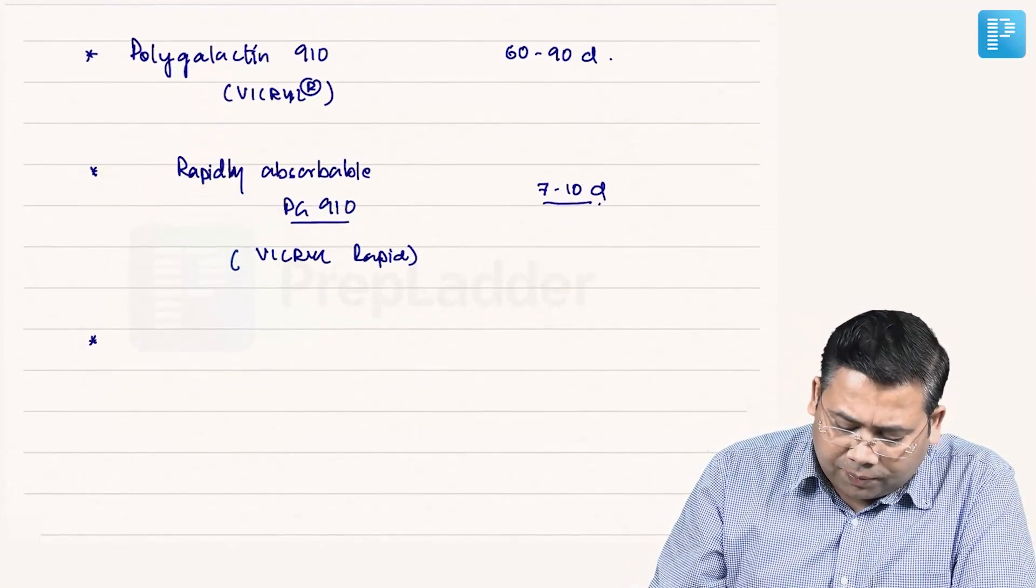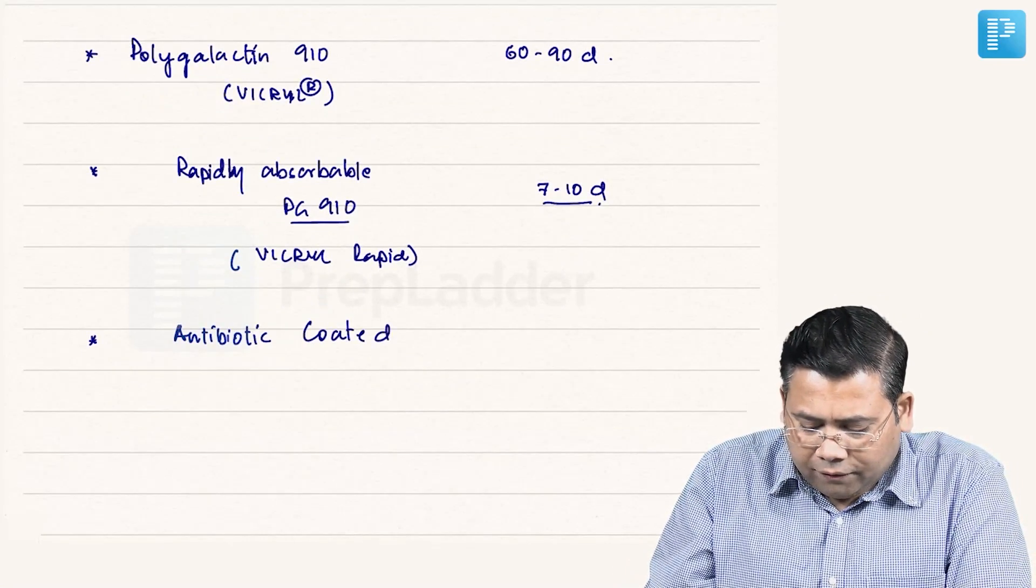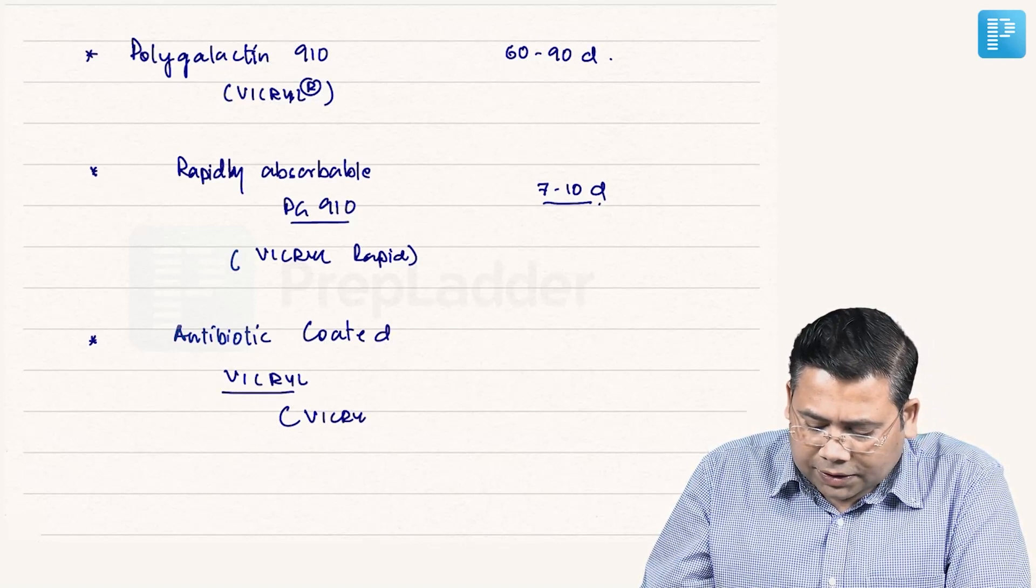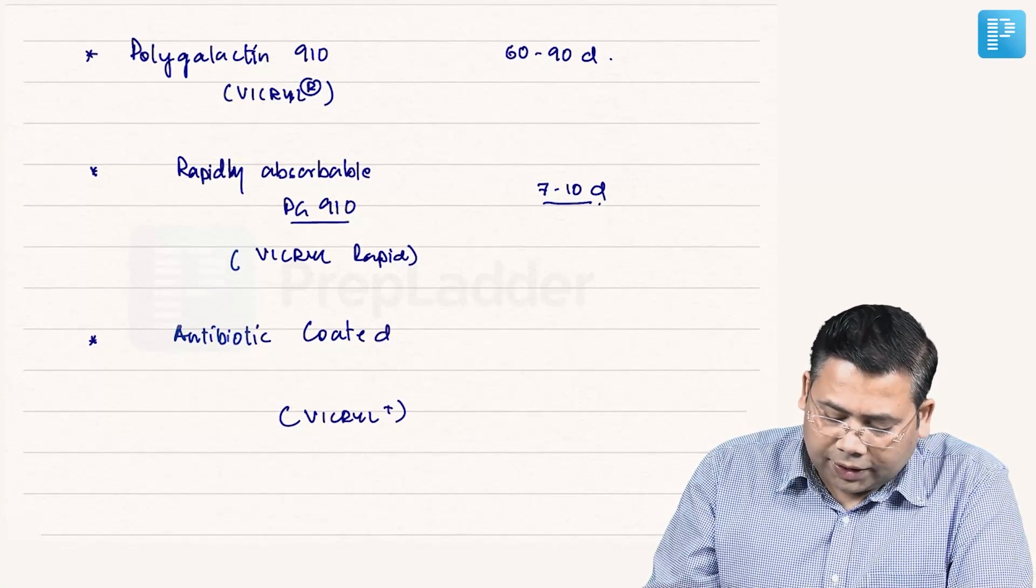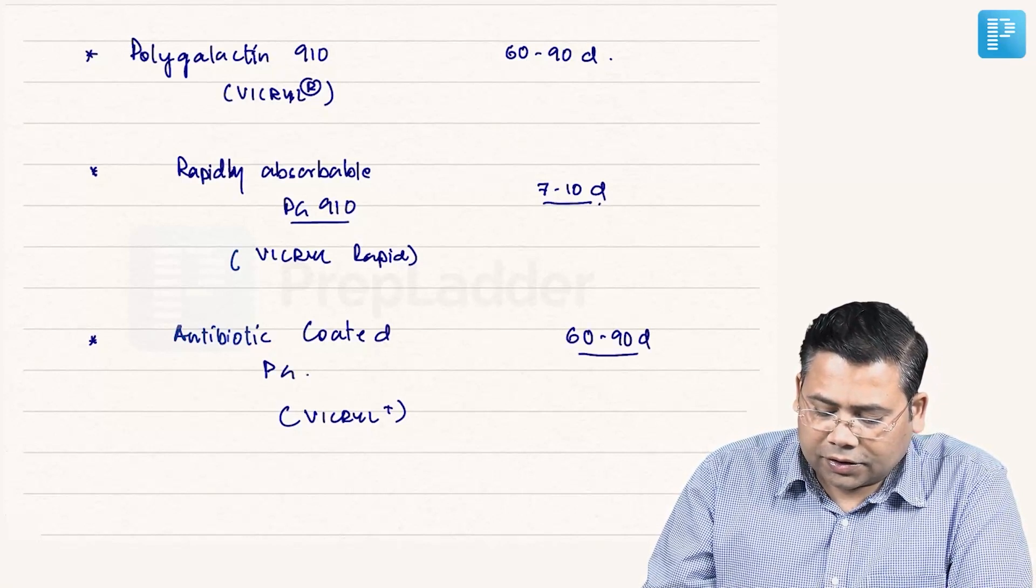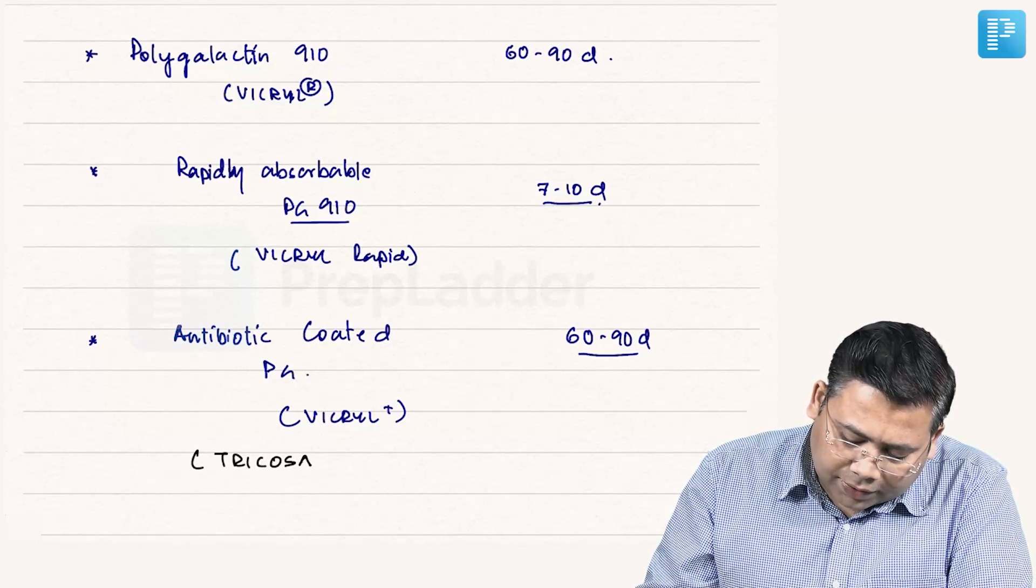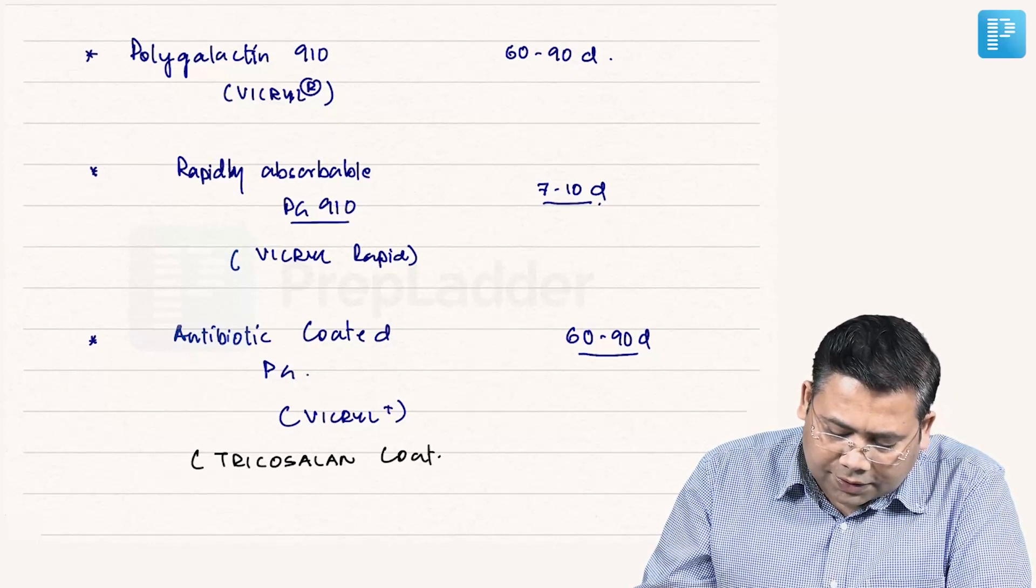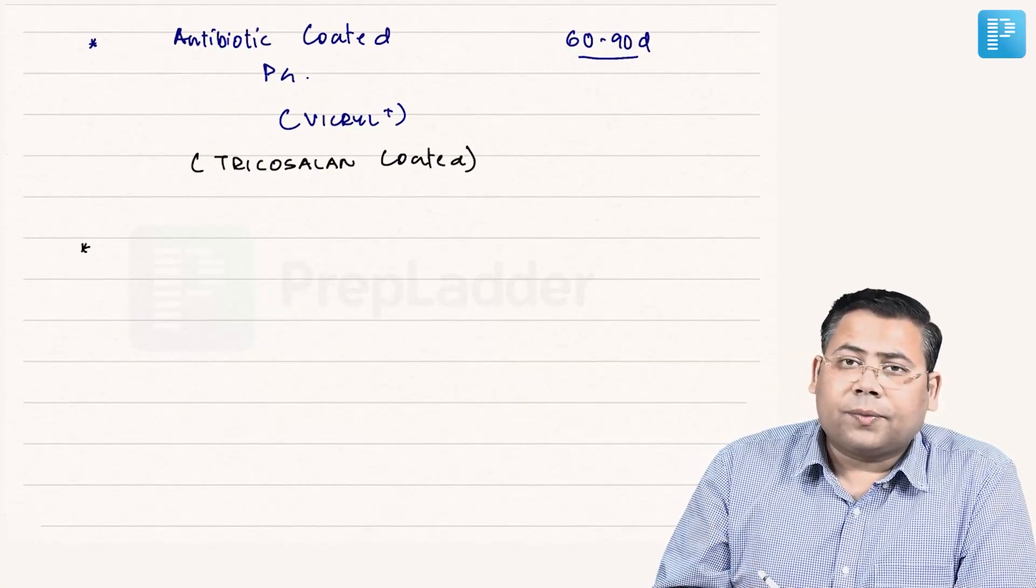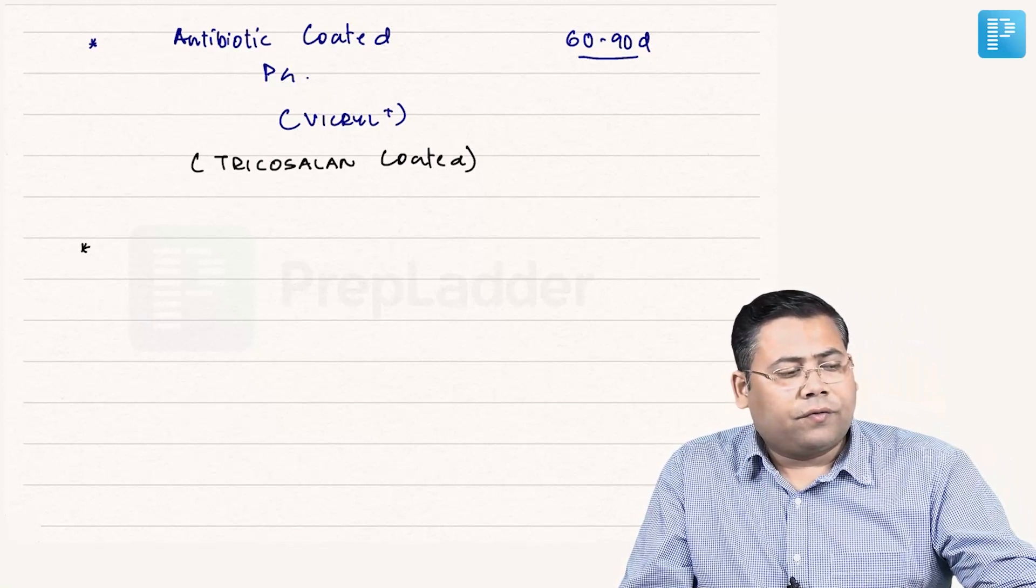Then we have Vicryl Plus, that is antibiotic coated Vicryl. When we talk about antibiotic coated Vicryl, this is marketed by the name of Vicryl Plus. I shouldn't be writing Vicryl, I should be writing polygalactin. And this is again 60 to 90 days and the days of absorption is same, but the advantage is that it is triclosan coated. And since it is triclosan coated, yes, it can be used for GI anastomosis at the colorectal spaces or the coloanal anastomosis where the risk of anastomotic leakage because of infection is quite high.